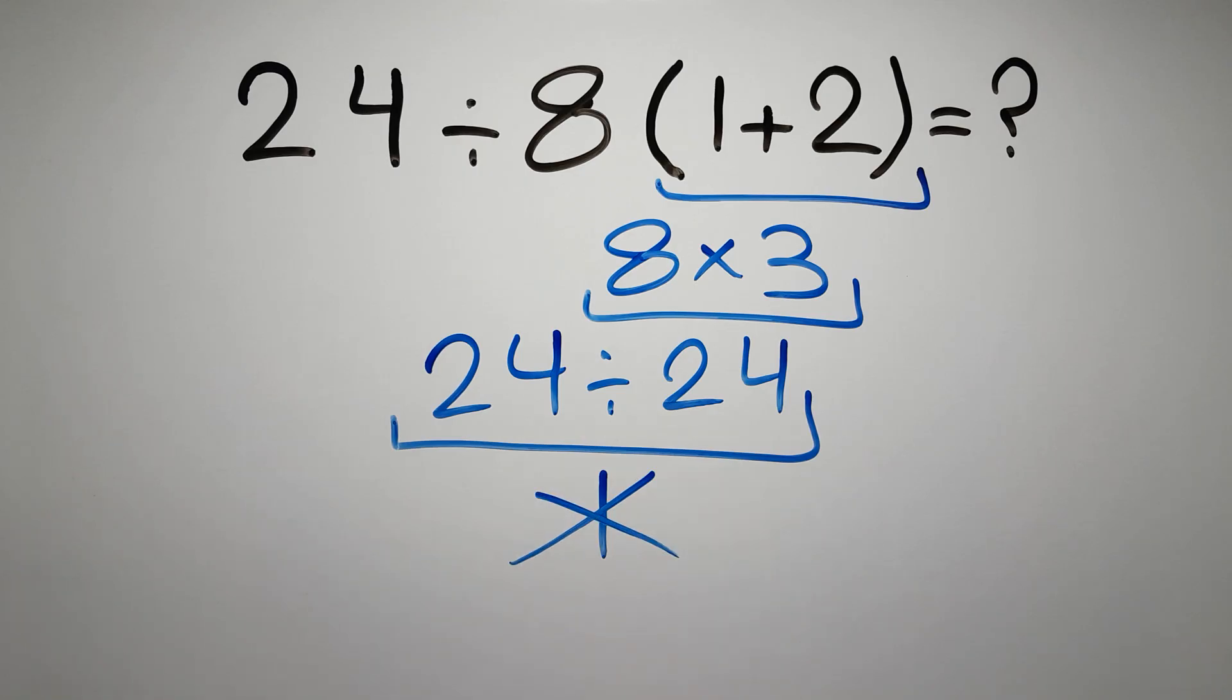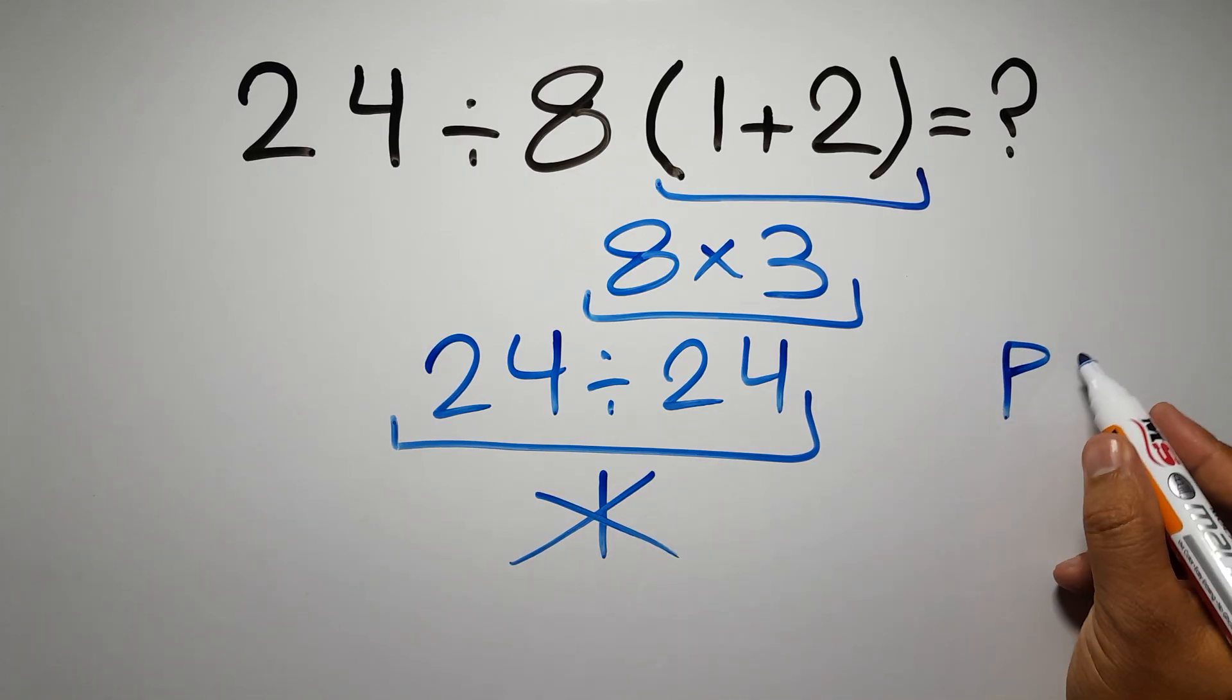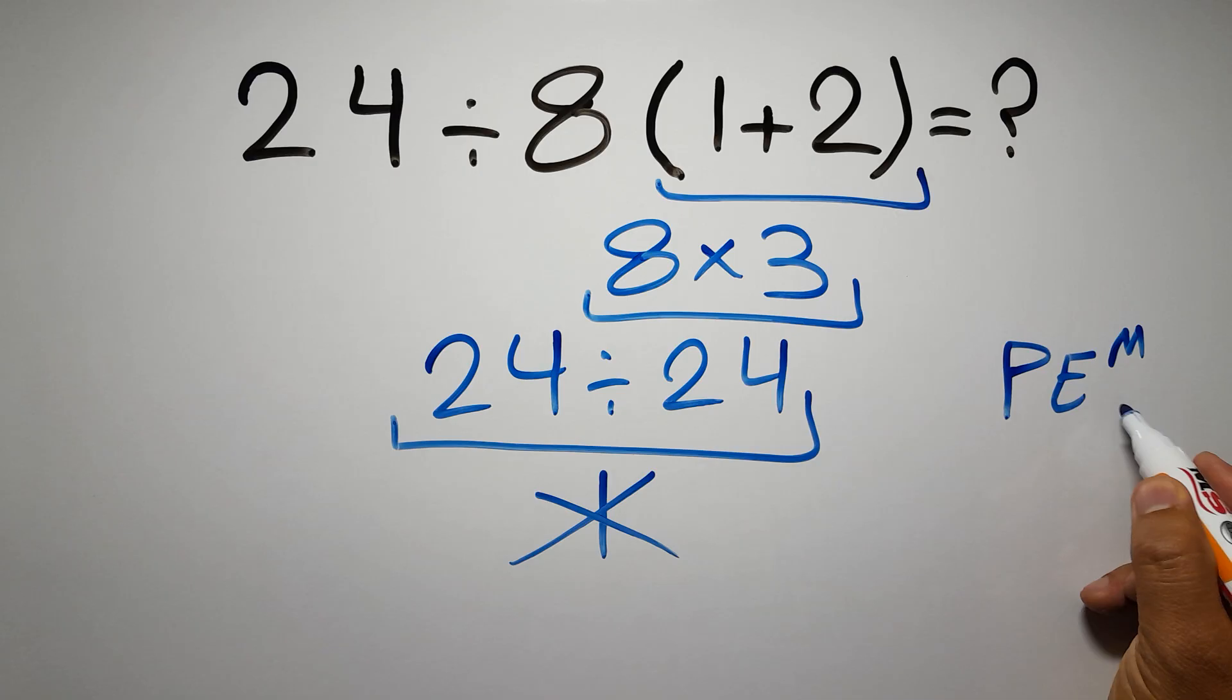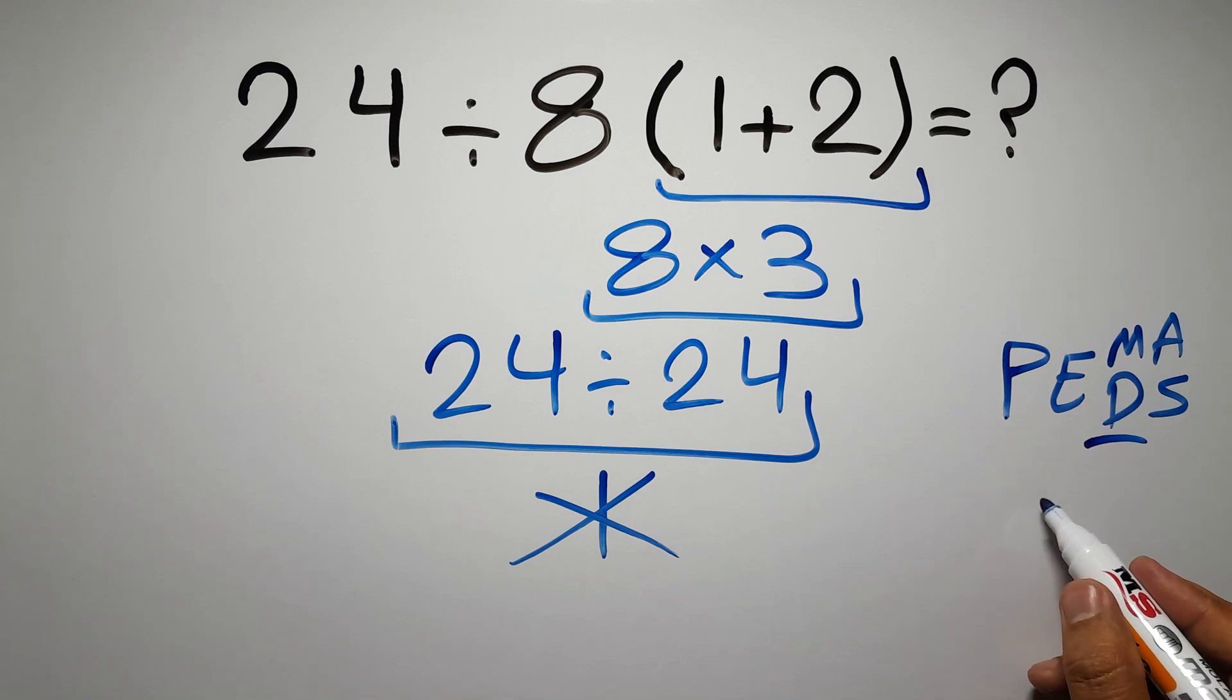Because according to the order of operations, first we have to do parentheses, then exponents, then multiplication or division, and finally addition or subtraction. Remember that multiplication and division have equal priority, and we have to work from left to right, and the same applies to addition and subtraction.